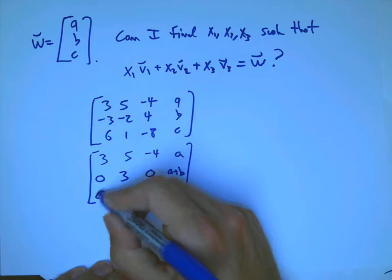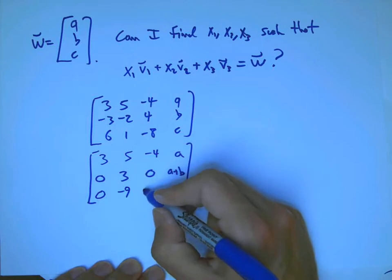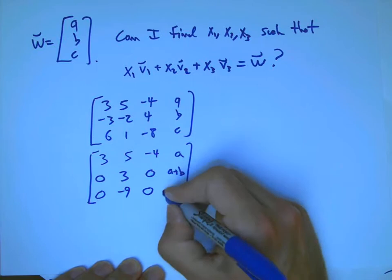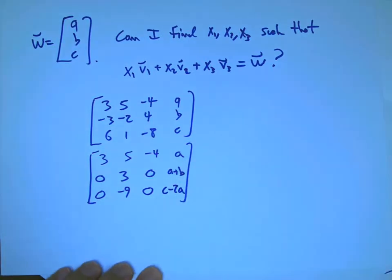So this is going to be a plus b. I'm going to subtract twice the first row from the second row. And so that's going to be c minus 2a.